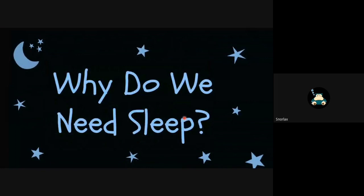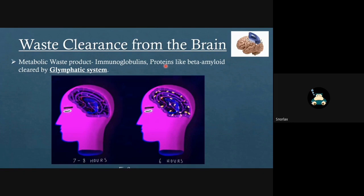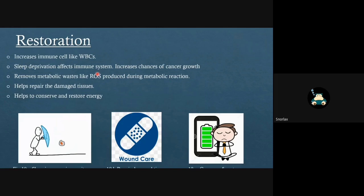So why do we need sleep? Sleep provides many benefits, like waste clearance from the brain. Metabolic waste products are produced like amyloid proteins such as beta-amyloid and tau proteins. It is seen that a person receiving less than 6 hours of sleep has a higher chance of producing beta-amyloid, which may cause Alzheimer's disease. Like our body has a lymphatic system, our brain has a glymphatic system, which acts as a cleansing system active during sleep. Sleep provides restoration. Sleep increases immune cells like WBC. If we are sleep deprived, it weakens the immune system. It also increases the chances of cancer growth. Sleep removes metabolic waste like reactive oxygen species, which are produced during metabolic reactions. Sleep helps repair damaged tissue and also helps to conserve and restore energy.